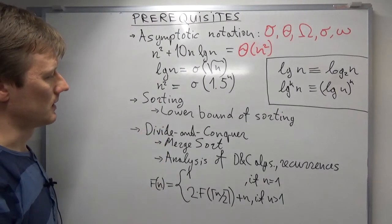So we write log n is little o of square root of n. Likewise, any exponential function grows faster than any polynomial function. So 1.5 to the power of n grows faster than n squared.